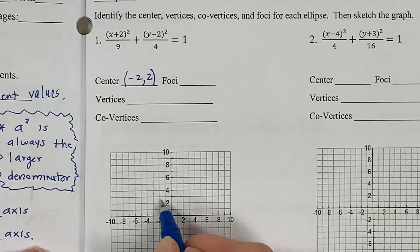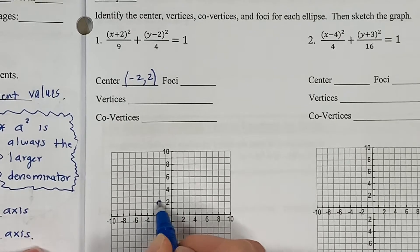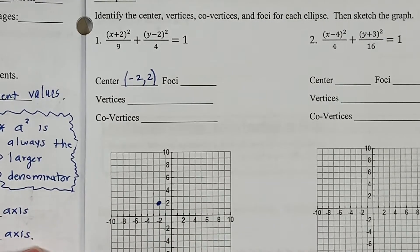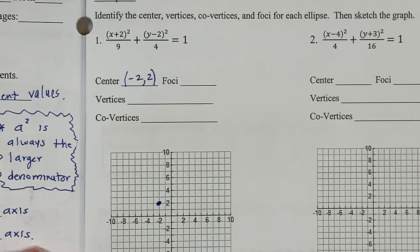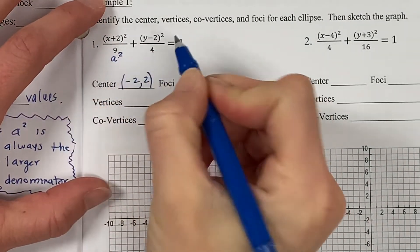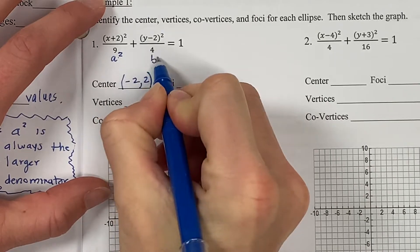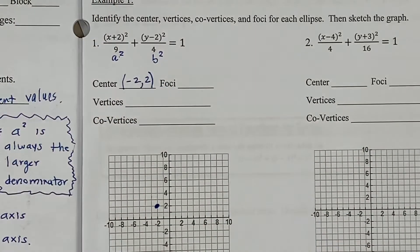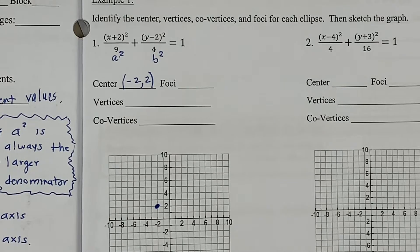From the origin, I'll go left 2 and up 2. Now the denominators — I have 9 and I have 4. A squared is always the largest denominator, so the 9 represents a squared and the 4 represents b squared. Since a squared is under the quantity with x, this will be elongated along the x-axis, or horizontally.